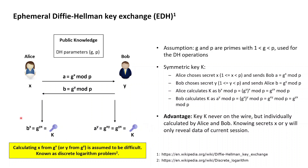Alice, for example, takes the half-key B received from Bob and calculates this half-key B to the power of her secret X. Looking at the arithmetics, this results in the value G to the power of X·Y. Bob does a similar calculation based on his secret, and looking at the arithmetics involved we can see that Alice and Bob indeed arrive at the same value, which they then take as a symmetric key to encrypt the data that they will subsequently exchange between them.